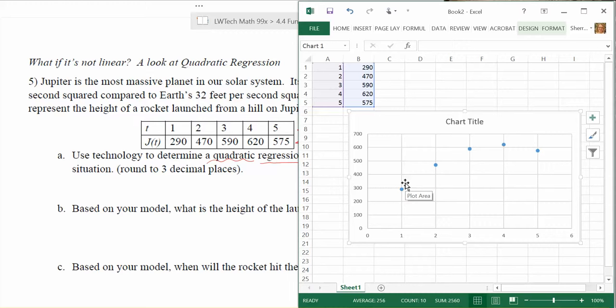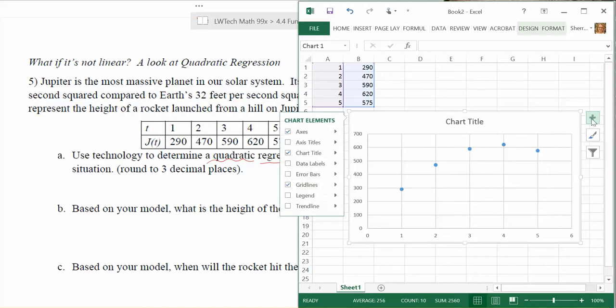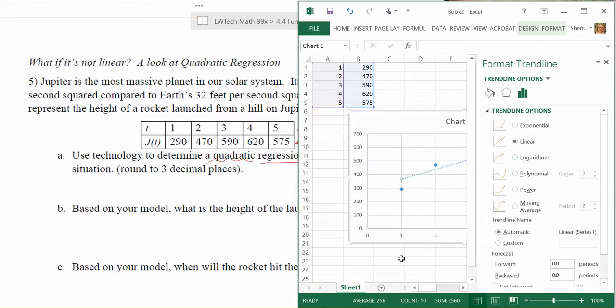Let's see how good the computer does here. We start with the plus symbol. We're going to click on trendline. Right now it's put a line in there. That's not what we want. Let's go down to more options. When you click on more options, notice that the linear bubble is checked. We want a quadratic function. A quadratic function is actually a polynomial with order 2. The reason it's order 2 is because squared is the highest power in our function.